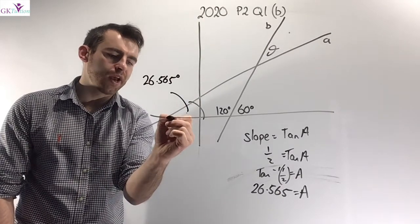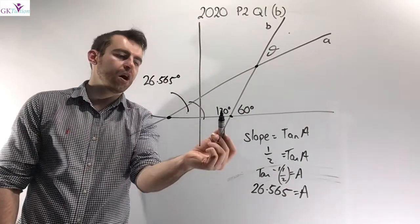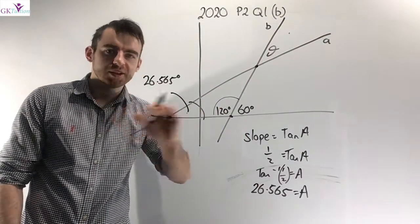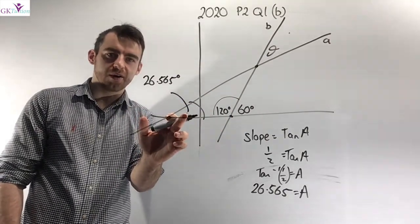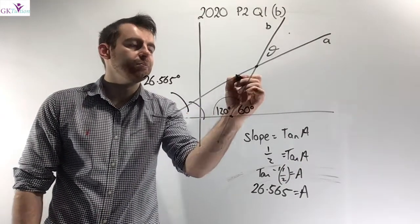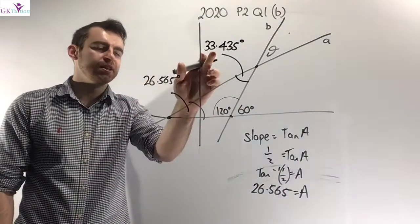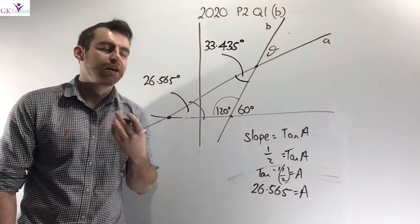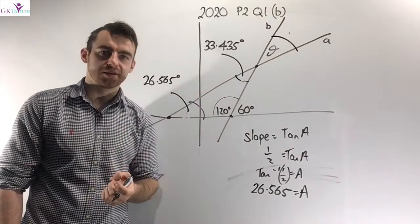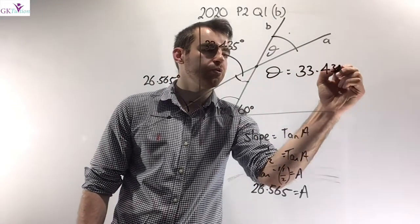Focusing on the triangle formed by the two lines and the x-axis: the three angles must add up to 180 degrees. I know one angle is 120 degrees and another is 26.565 degrees. Subtracting both from 180 gives the third angle as 33.435 degrees. This third angle is vertically opposite the angle theta I'm trying to find, so my final answer is theta equals 33.435 degrees.